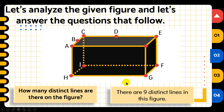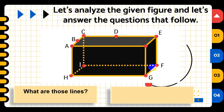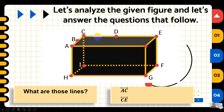To name a line, we must have at least two distinct points on it. The distinct lines are: line AC (or CA), and since there are three points on that line we can also use AB, BA, BC, or CB. The second line can be named CE, EC, CD, DC, DE, or ED. The third distinct line is CI or IC.